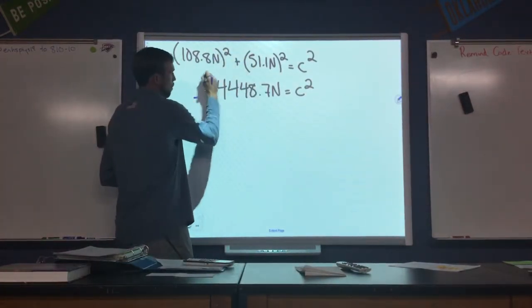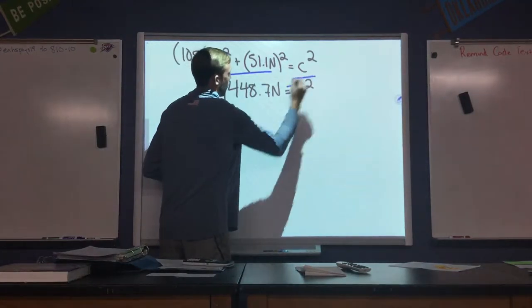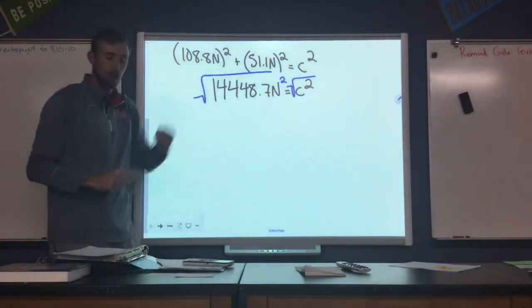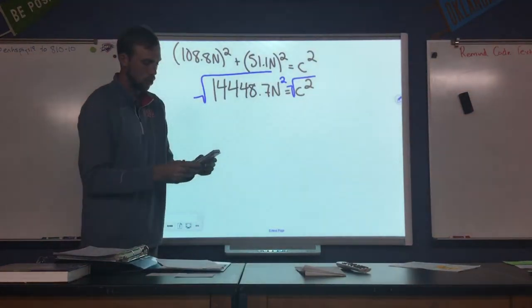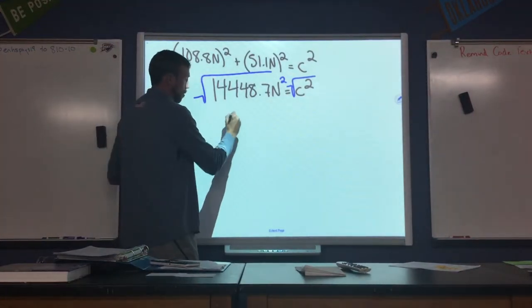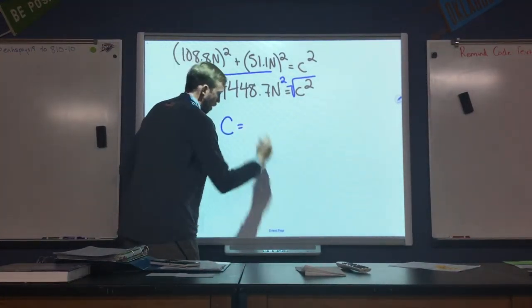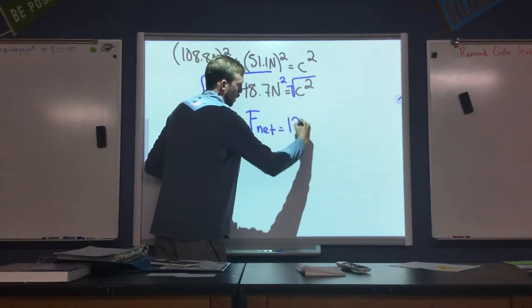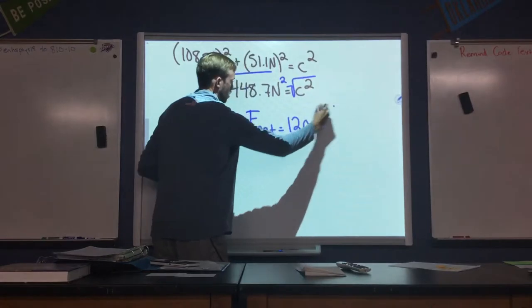And then we will take the square root to determine the value that we're looking for. And then we take a square root and we get a value of approximately 120.2. So our hypotenuse c, which is our net force, would be approximately 120.2 newtons.